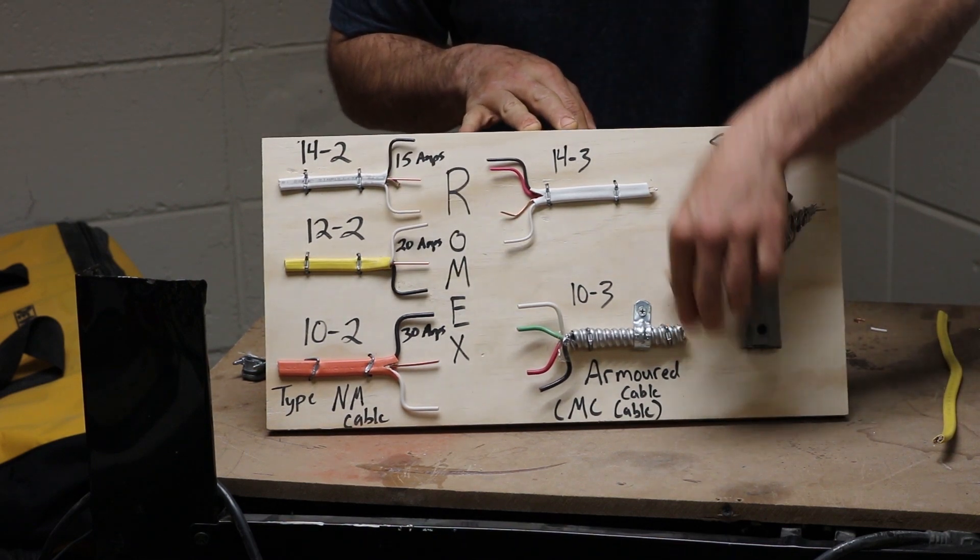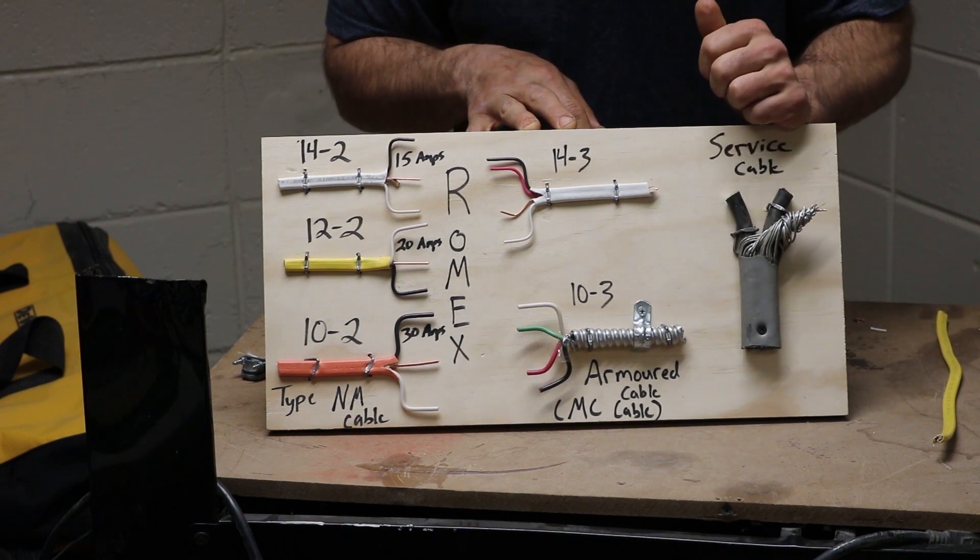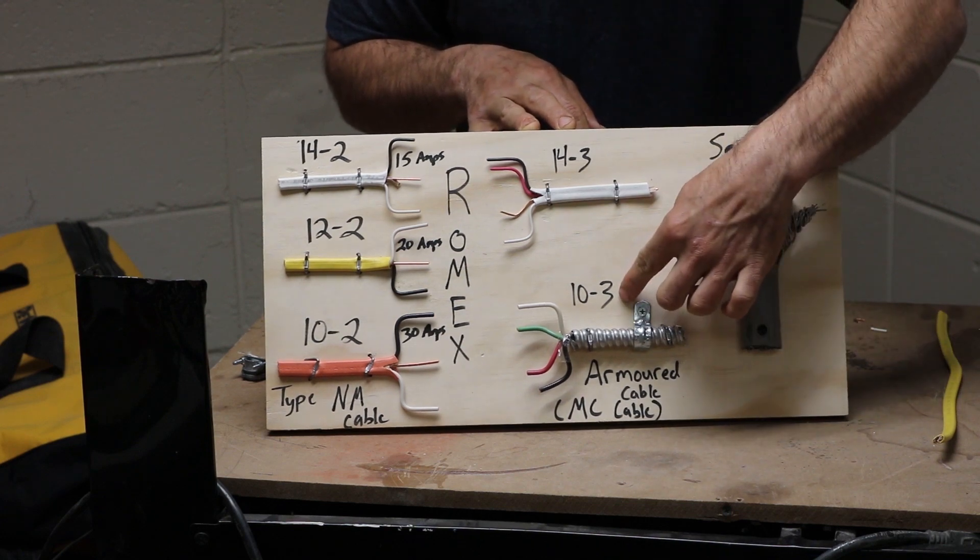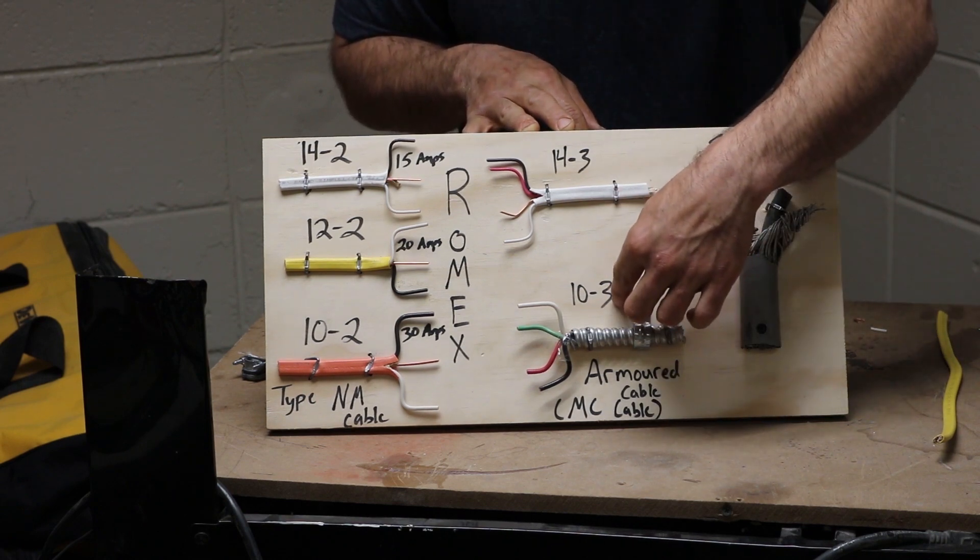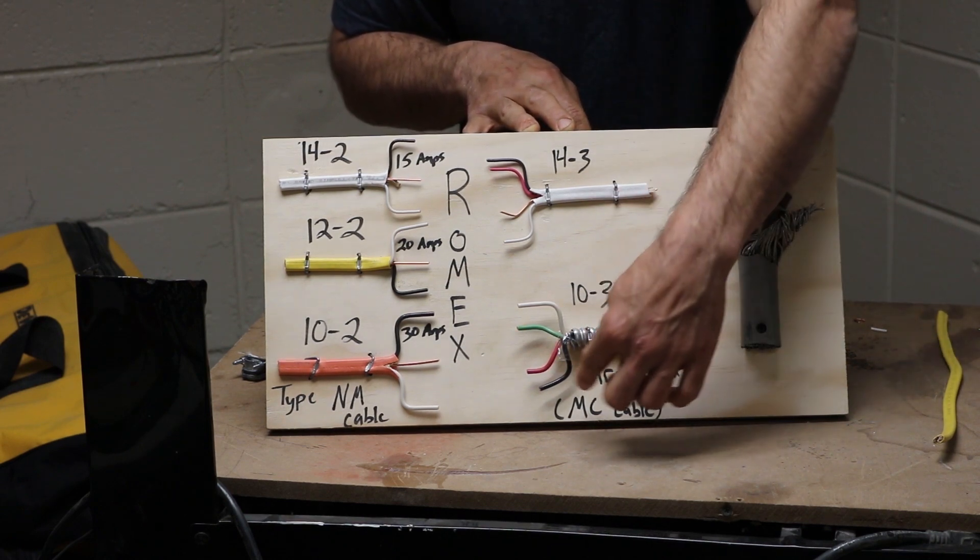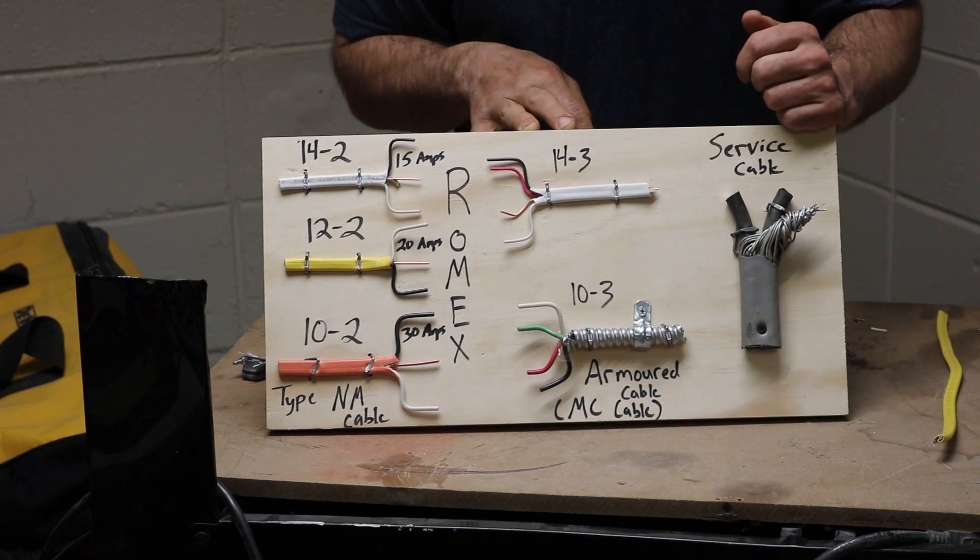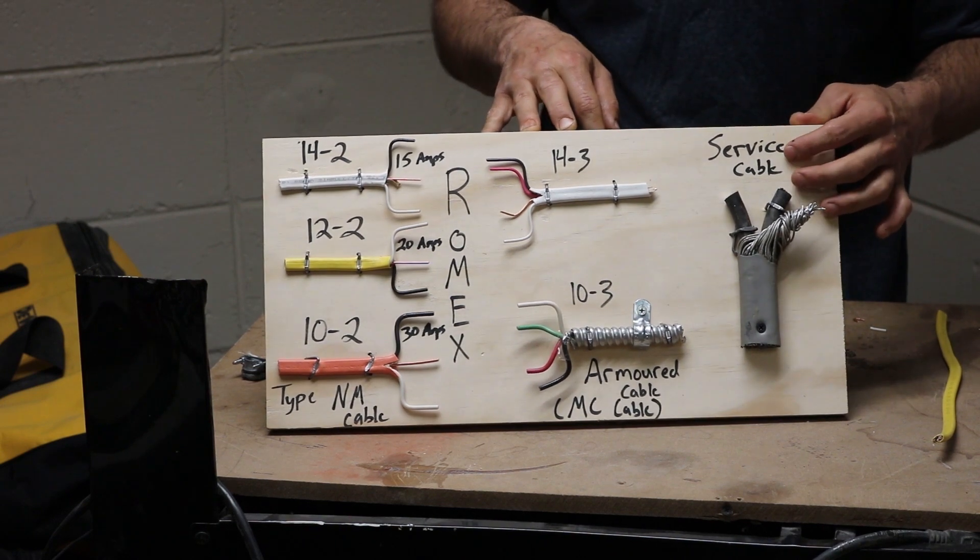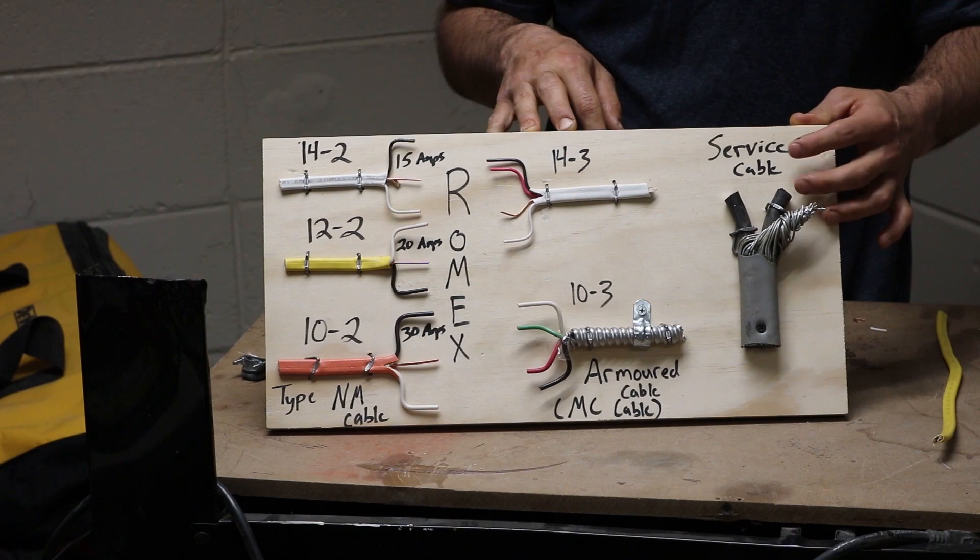This right here, NEC is going to call it armored cable. Trade name out in the field, you're going to call it MC cable. This would be an example of 10-3. Most commonly you'd be running 12-2 to 12-3, but I had a piece of scrap 10-3 laying around. As you can see, it's going to be black, red, white, and then your ground. You also have a service entry cable, and this service cable would be installed into a meter or a panel.